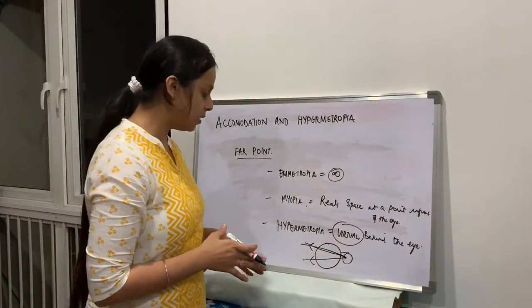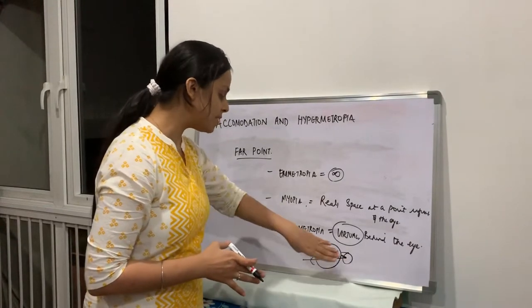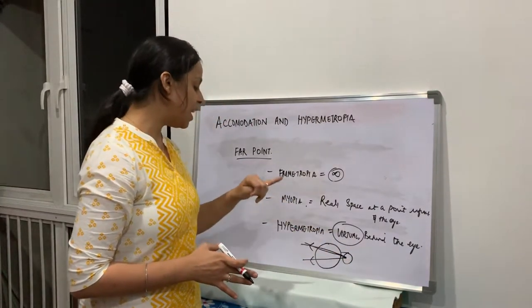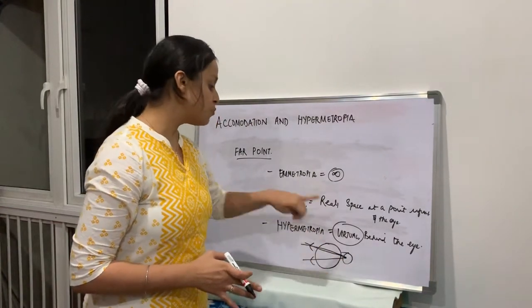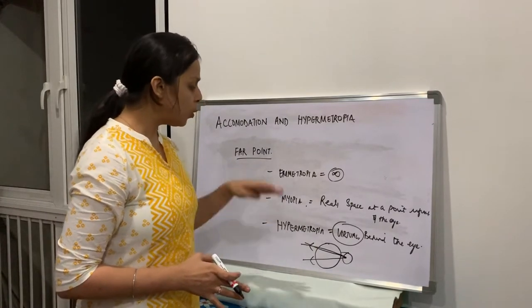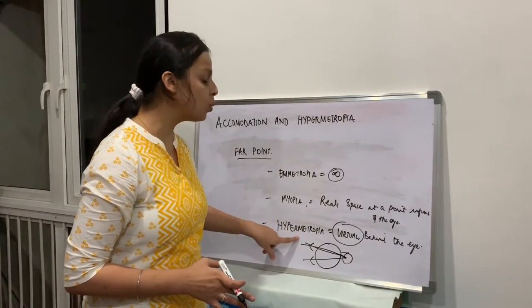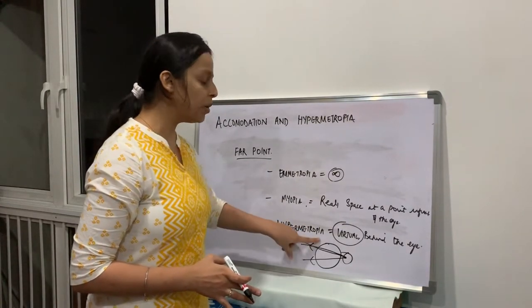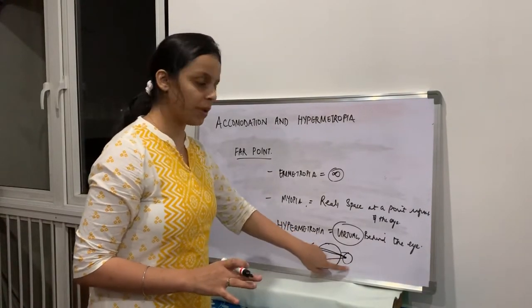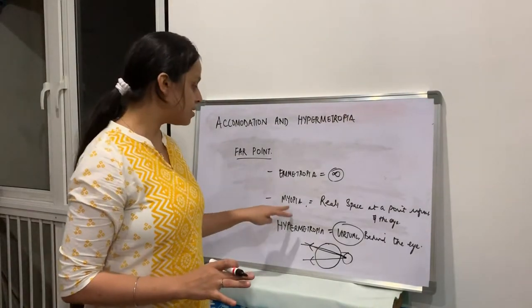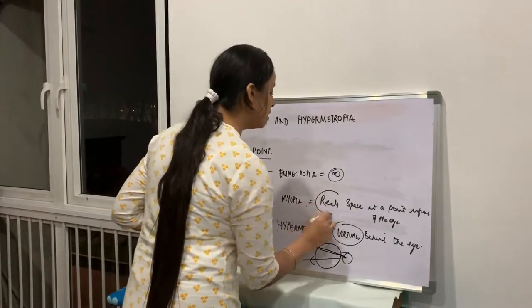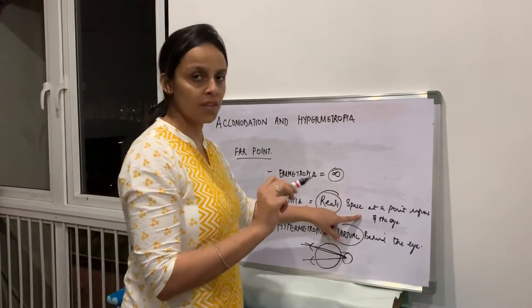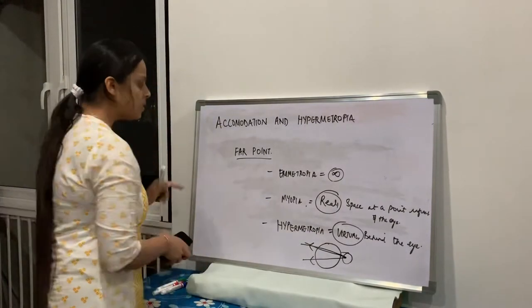Since we cannot put an object at the virtual Farpoint, the patient always has difficulty focusing. They cannot focus near objects nor distant objects. Children born with hypermetropia, with a refractive error of approximately 1 to 1.5 diopters, are very likely to develop amblyopia early. This does not happen in myopia because the Farpoint is real — we can actually place an object there to form a clear image on the retina.